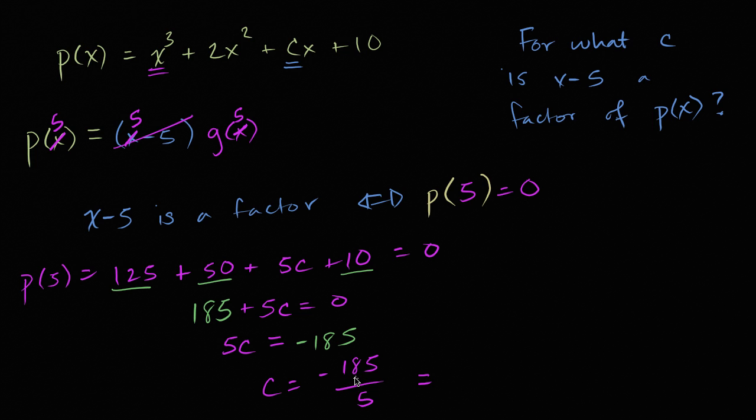Five times 30 is 150, and then we'll have another 35 to go, so it's going to be 37, negative 37. Five times 30 is 150, five times seven is 35, yep, negative 37.